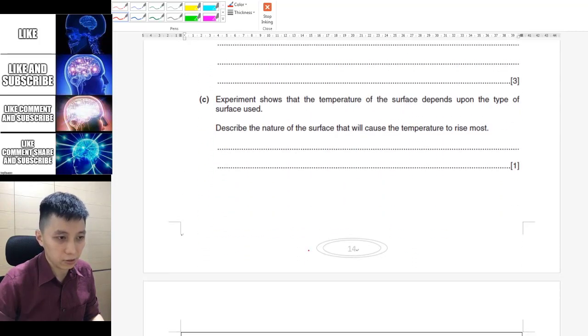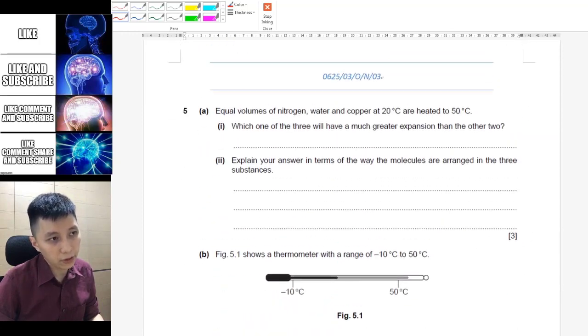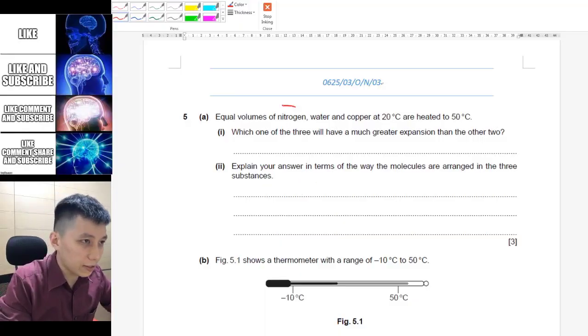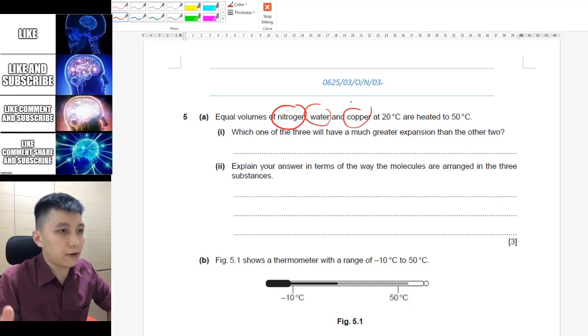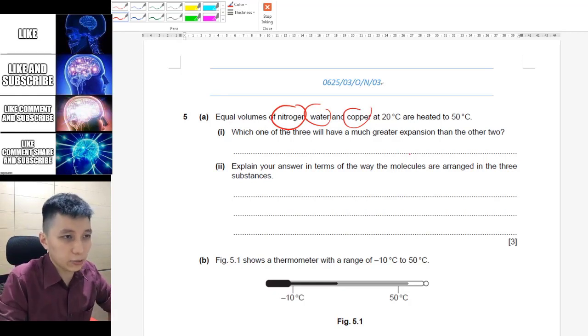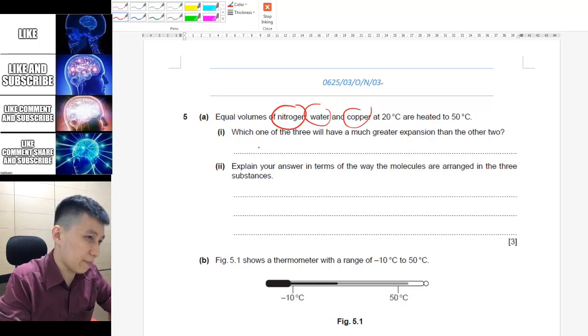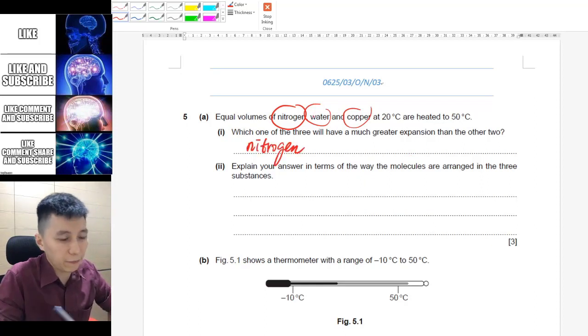The first question says that there's nitrogen, water, and copper. They are now heated up from 20 degrees Celsius to 50. Apparently they are kind of representing three states: solid, liquid, and gas. Here they ask which one will have greater expansion, and apparently it's going to be the one that is in gas form, so nitrogen.